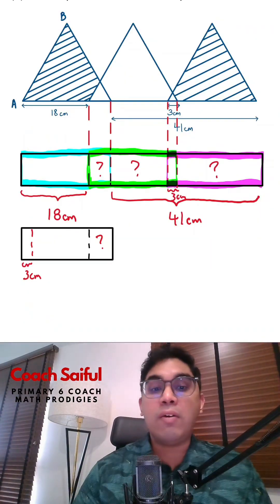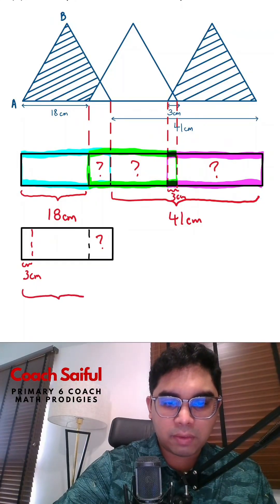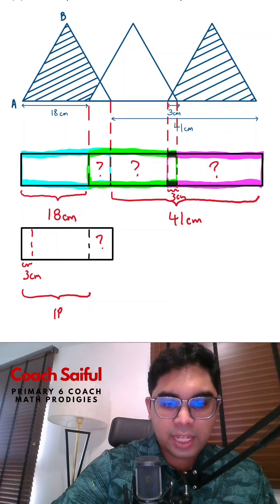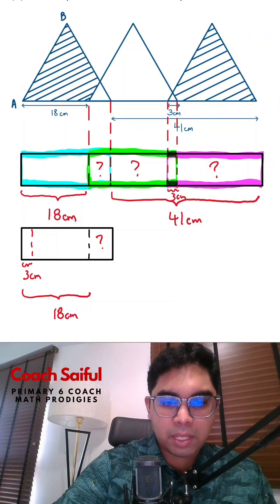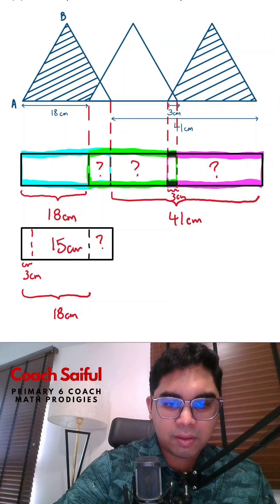Okay, I can find out the length of this because why? This is 18cm. So if that is 18cm, this segment here is going to be 15cm. Make sense? There you go.